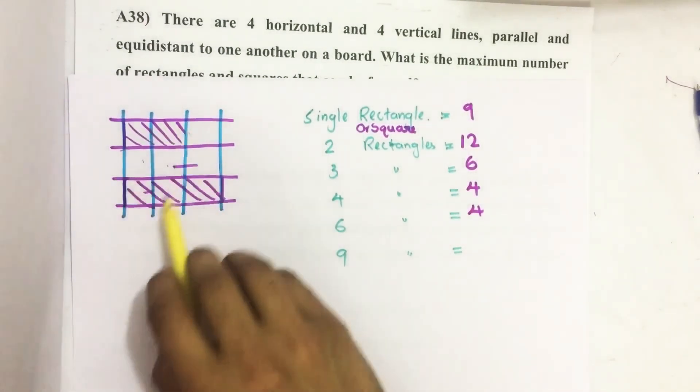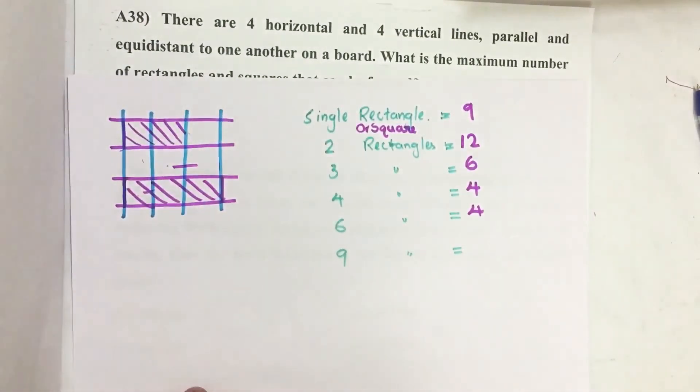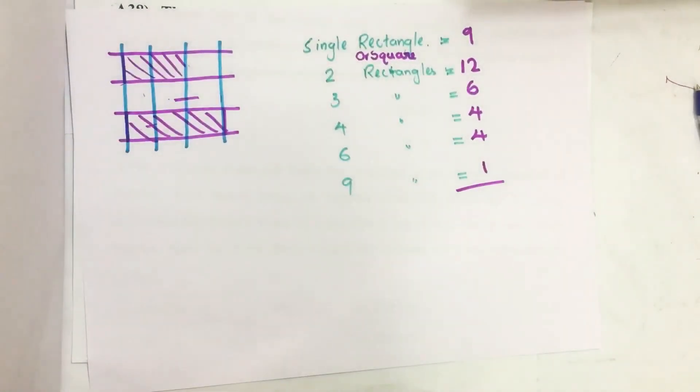Then by joining six units: one, two, three, four. Then by joining all these nine we have a bigger square, so only one.